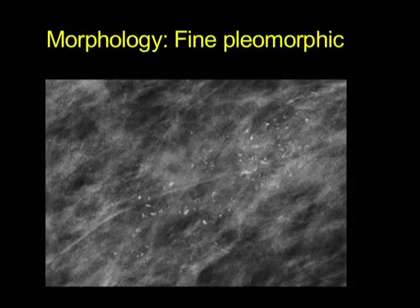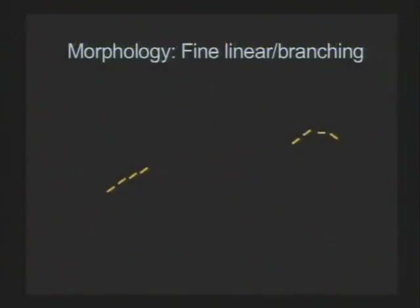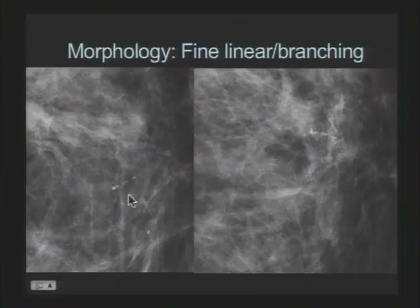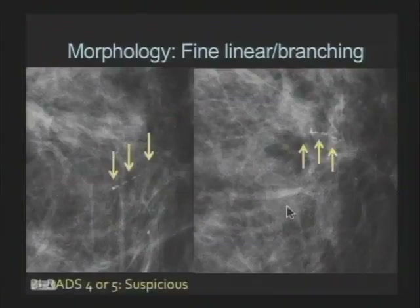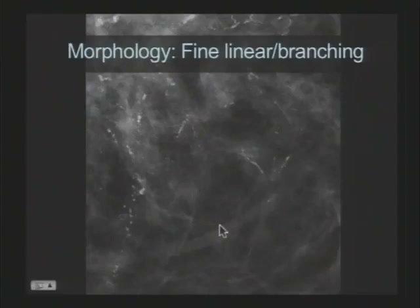Fine linear and branching calcifications are thin, linear, curvilinear calcifications that suggest the filling of a duct by cancer, and they have a high probability of malignancy. On a mammogram, you see these linear calcifications in a linear distribution — they usually travel together. Another example shows the casting appearance of calcifications within ducts and branching. Fine linear branching calcifications are highly suspicious — always biopsy.